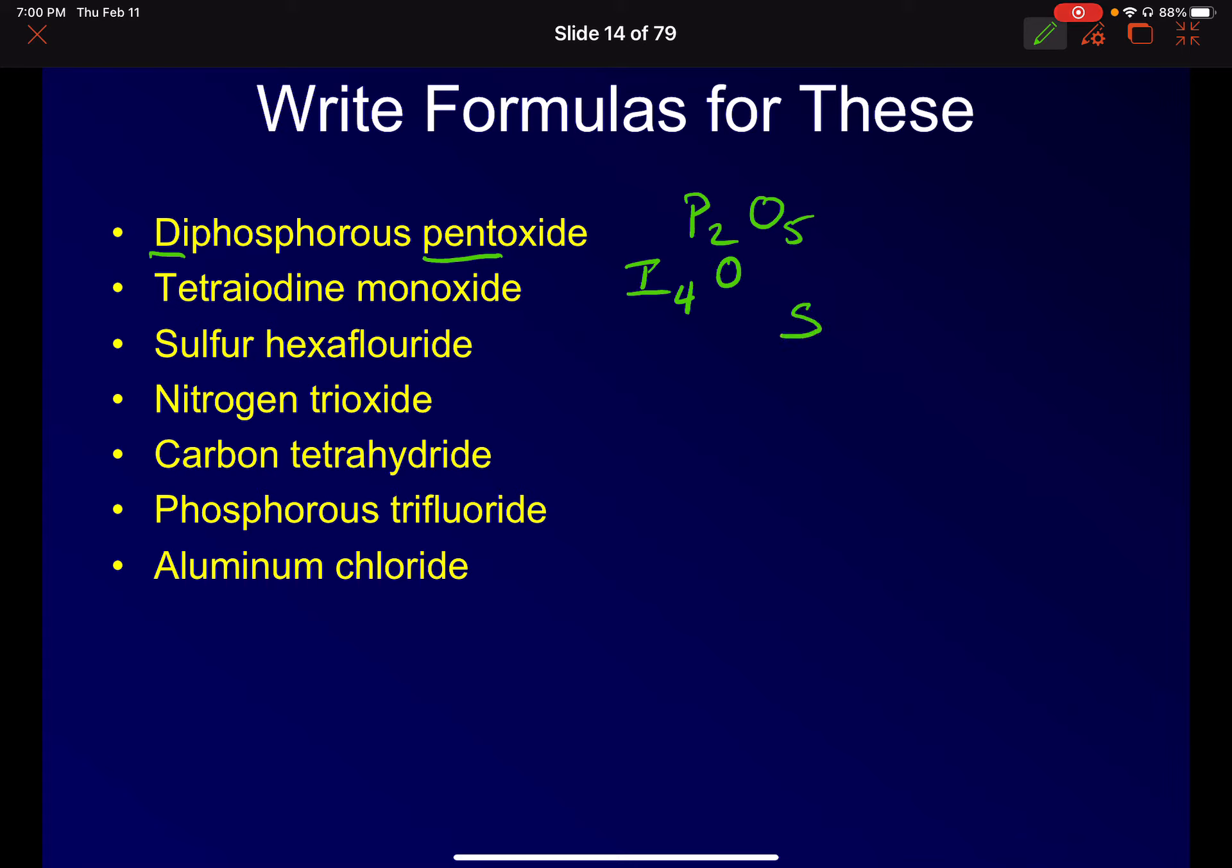Sulfur hexafluoride. So that's one sulfur and six fluorides. We've got nitrogen trioxide. We've got carbon by itself again, because it doesn't say mono, but it's just carbon. Tetrahydride. So that's CH4. Phosphorus trifluoride. So PF3. And here's another one. Oops. I tried to sneak another one in there on you. Aluminum is a metal. So it is still AlCl3 because I've got a plus three and a minus one. And so I need to cross my charges. But again, that is your ionic thing.